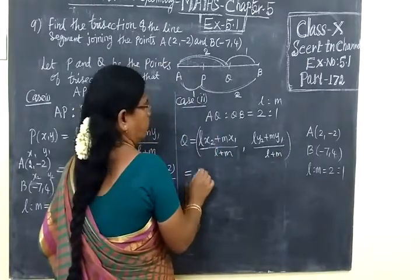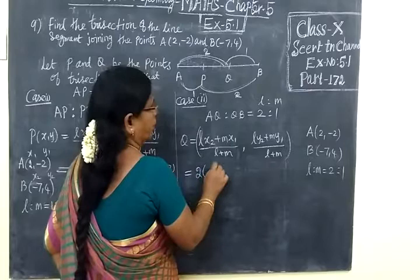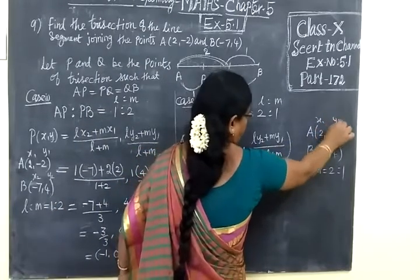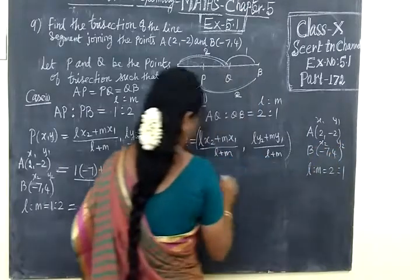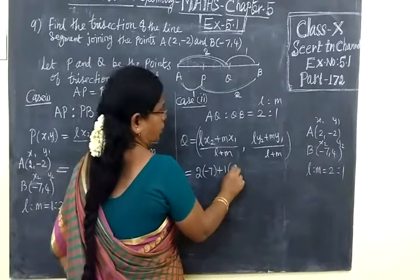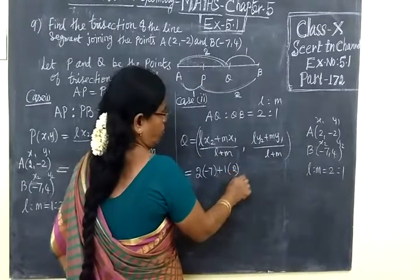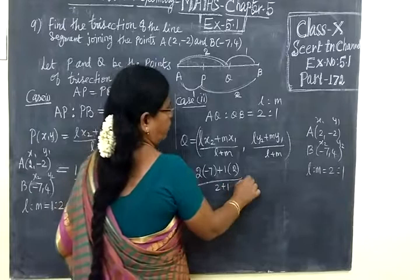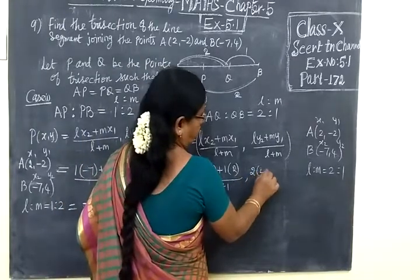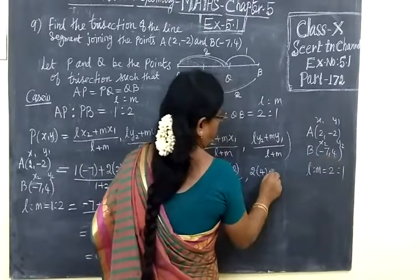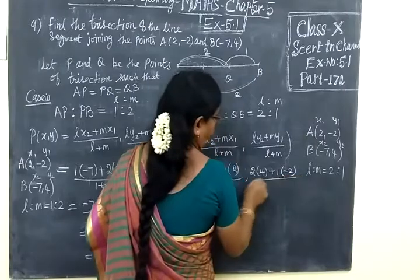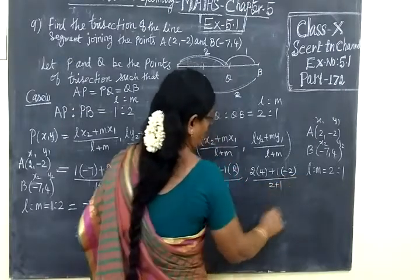L, 2 bracket X2. X1, Y1 then X2, Y2 minus 7 plus M, 1 bracket X1, 2 by L plus M, 2 plus 1. Then L 2 bracket Y2, 4, plus M, 1 bracket Y1 minus 2 by L plus M, 2 plus 1.